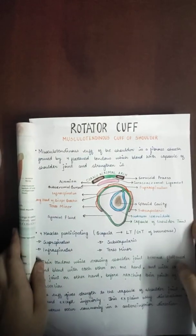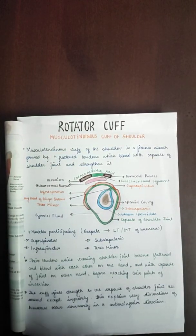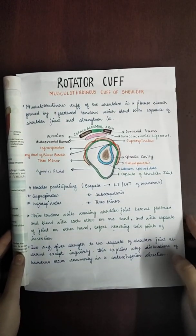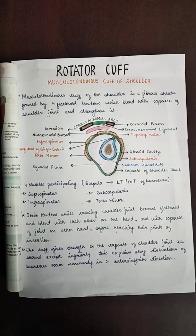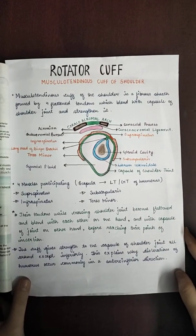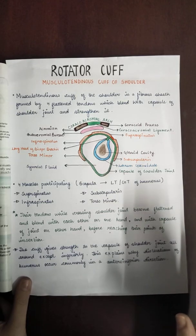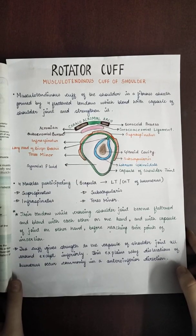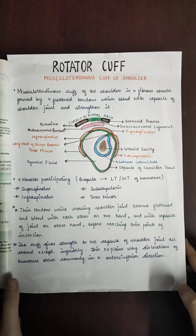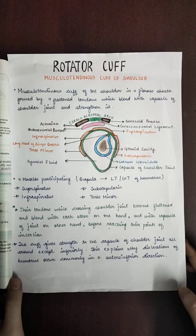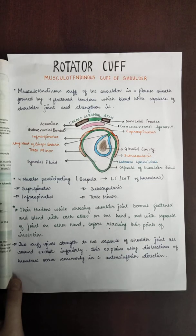The musculotendinous cover of the shoulder is a fibrous sheath formed by four flattened tendons which blend with the capsule of the shoulder joint and strengthen it. The four muscles originating from the scapula and inserting into the lesser or greater tubercle of the humerus are supraspinatus, infraspinatus, subscapularis, and teres minor. Their tendons become flattened while crossing the shoulder joint, blend with each other and with the joint capsule before insertion. The cuff strengthens the capsule all around except inferiorly, explaining why dislocation of the humerus occurs commonly in the anterior-inferior direction.